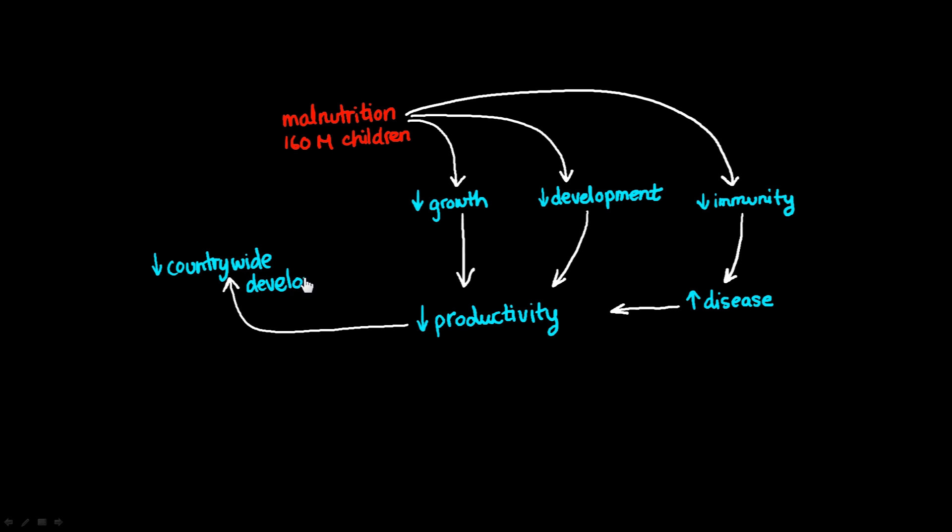Well, the first sort of side effect or symptom of that is going to be widespread poverty. You're going to see a lot of poverty. And, of course, one of the sequelae or the follow-ons of widespread poverty is, of course, malnutrition in children.